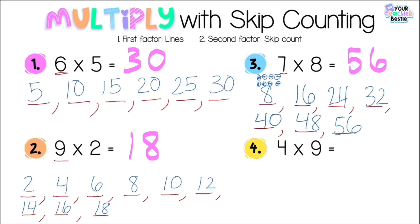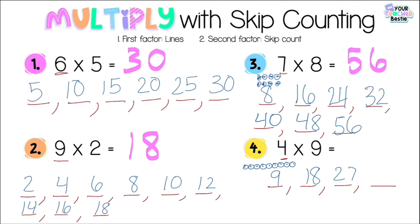Let's do number four: four times nine. Four times means four lines. We're skip counting by nine, so I draw nine circles on top to help. If you already know how to skip count by nine, go ahead and skip count to the end and stop — that's your product. Starting with nine, I count on: ten through eighteen — first skip. Then nineteen through twenty-seven — second skip. Then twenty-eight through thirty-six. So four times nine is equal to 36.